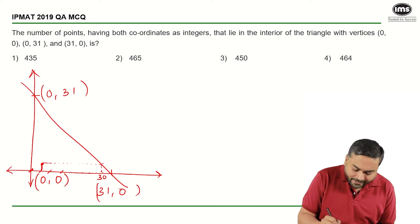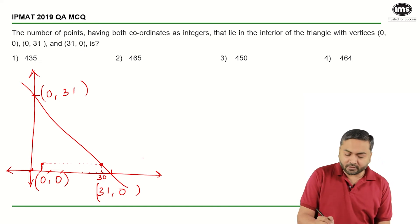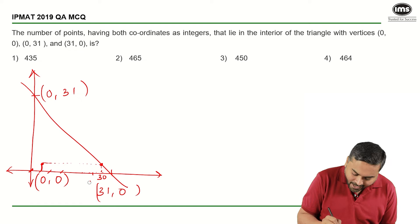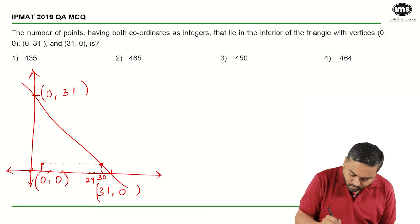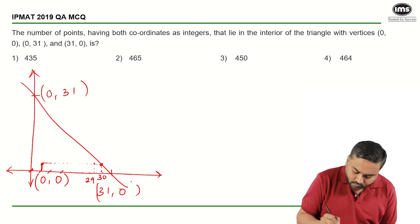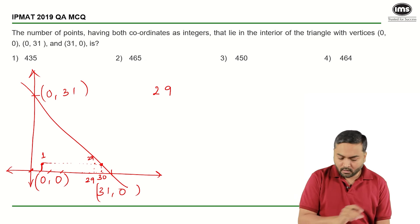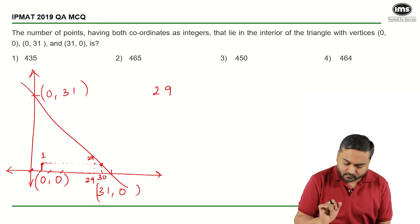I have to take this point which will be in the interior. So from x equals 1 till x equals 29 is where I can go here. So there are 29 points in the bottom of the interior of the triangle.